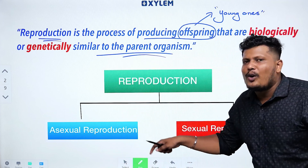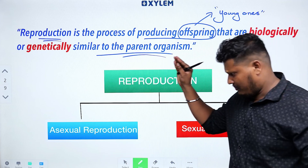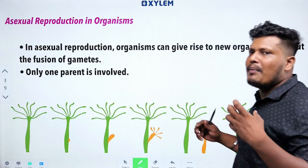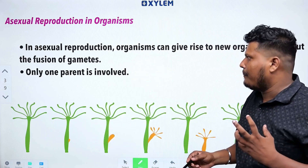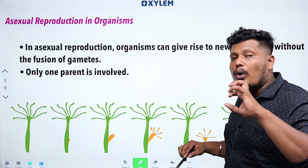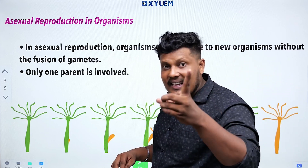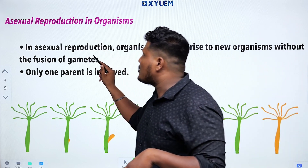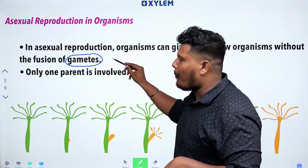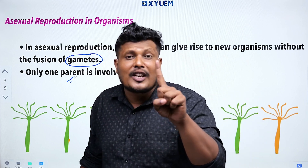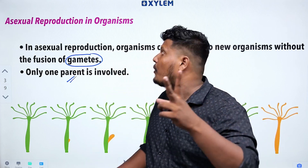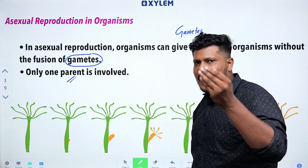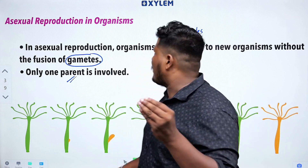So reproduction includes two modes: asexual reproduction and sexual reproduction. Let's discuss asexual reproduction. In asexual reproduction, an organism can give rise to new organisms without fusion of gametes. Gametes are not produced here. Very important point: only one parent is involved. Gametes — for example, in humans, the male produces sperm and the female produces the egg — these gametes are not formed and not fused.